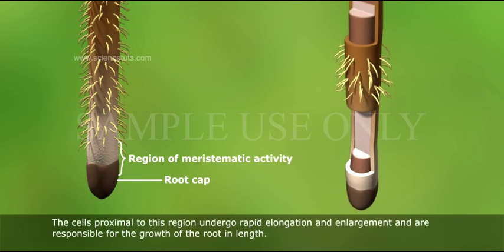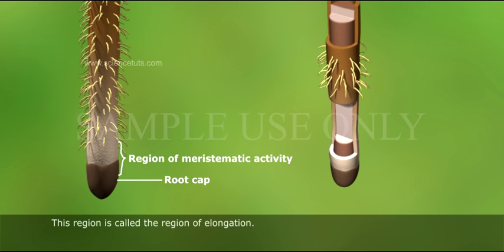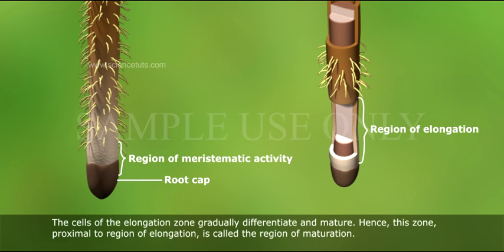The cells proximal to this region undergo rapid elongation and enlargement and are responsible for the growth of the root in length. This region is called the region of elongation. The cells of the elongation zone gradually differentiate and mature.